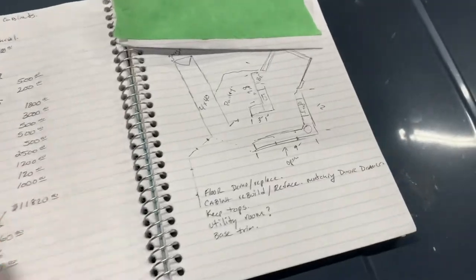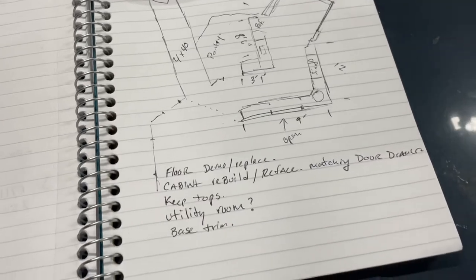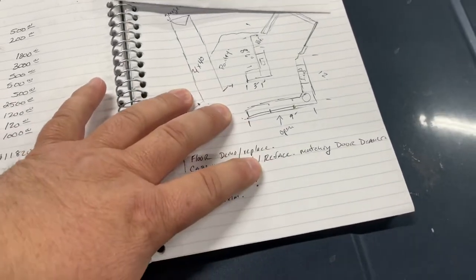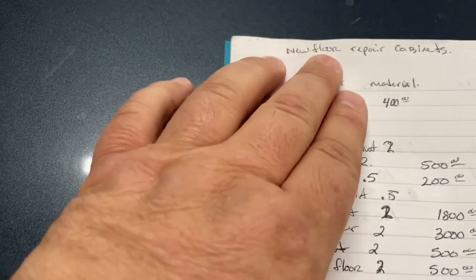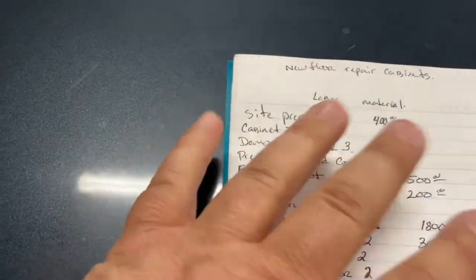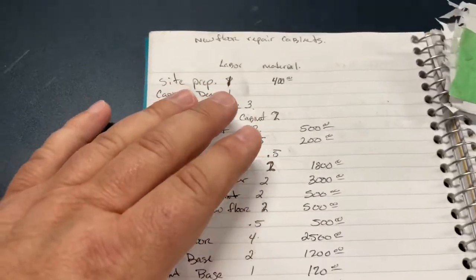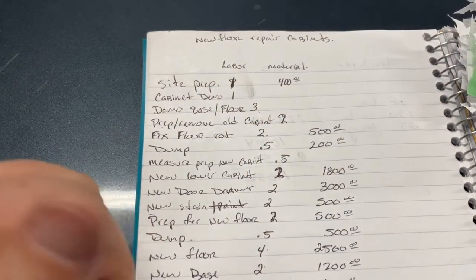All right. So that's some of the notes I took off of this are pretty simple and straightforward, not a very difficult one. So then when I get home, I start building this job. So again, this is a new floor repair cabinets. That's basically the gist of this job. But if you've done remodeling, you know that that doesn't just stop there.